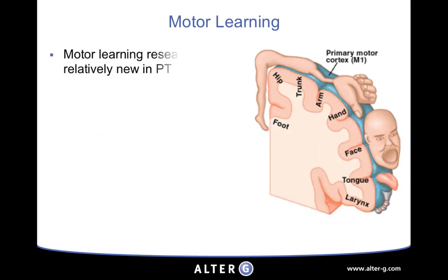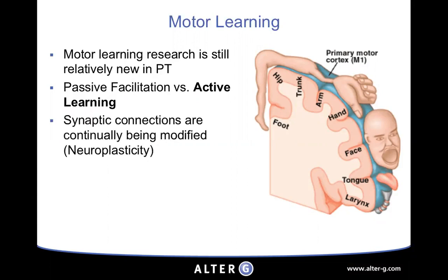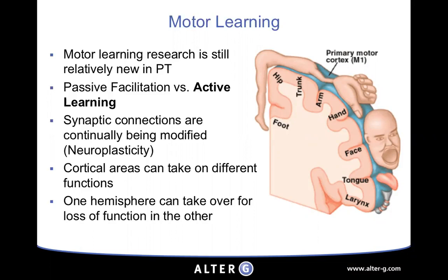Motor learning is still relatively new in the field of PT, and there's a difference between active learning and passive facilitation. With active learning, you're trying to help patients develop new skills and retrain parts of the brain that have been damaged. These synaptic connections are continually being modified — the neuroplasticity we have is what allows for motor learning. Cortical areas can take on different functions, so when there's damage to certain areas, other areas can learn those functions.